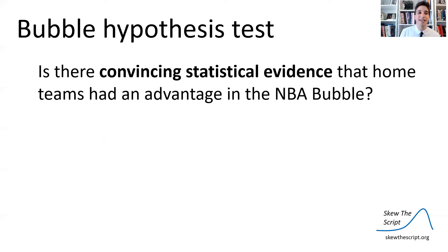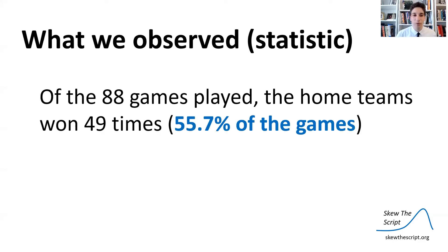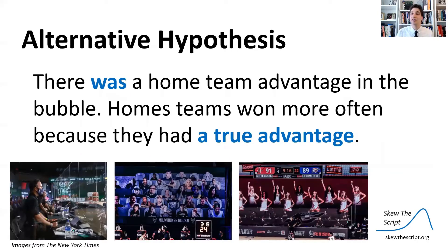If you're asked a question like this — is there convincing statistical evidence that the home teams had an advantage in the NBA bubble? — that language, 'convincing statistical evidence,' means you probably have to conduct a hypothesis test. What we observed was that of the 88 games played, the home teams won 49 times — that's 55.7% of the games. We have a null hypothesis, the default dull hypothesis: there was no true home team advantage; the home teams happened to win more often by chance alone. And then there's the alternative hypothesis — that there was a home team advantage, that the NBA did create one with its projections and stuff, so the home teams had a true advantage and won more games.